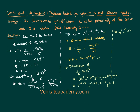Therefore the dimensions of half epsilon naught E squared are M L⁻¹ T⁻². This is the final answer to the problem.